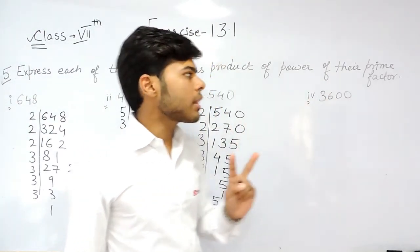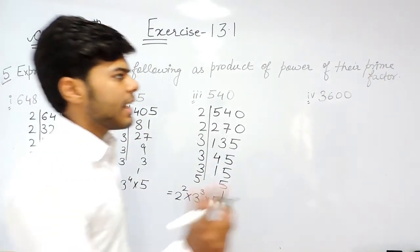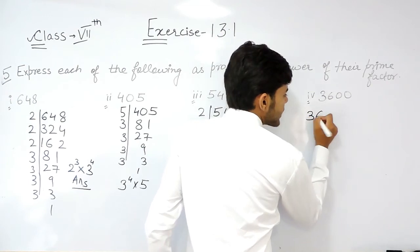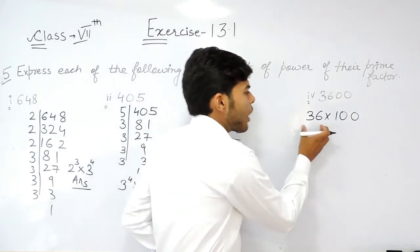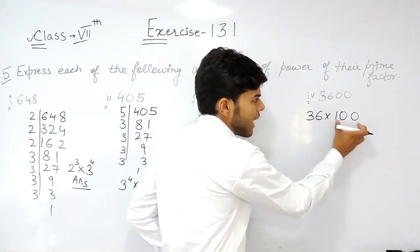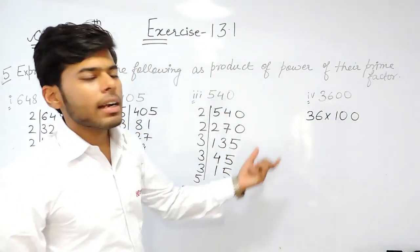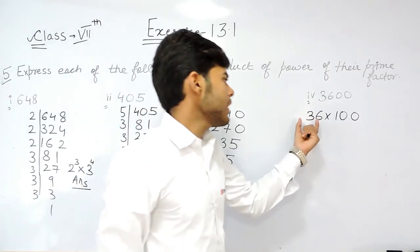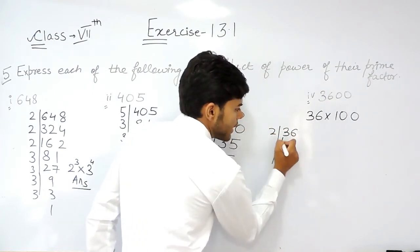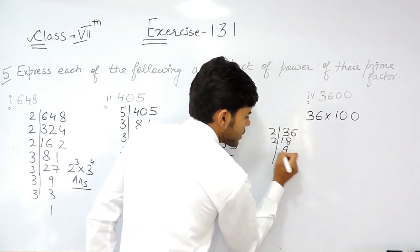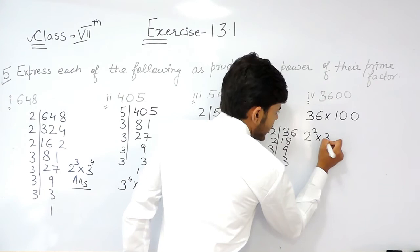For the last one, there are two methods to solve this. The second method is that 3600 can be written as 36 multiplied by 100. We can simply find the prime factors of 36 and 100 separately and then multiply them together, rather than completely factorizing 3600. The factors of 36 will give us 2 to the power 2 multiplied by 3 to the power 2.